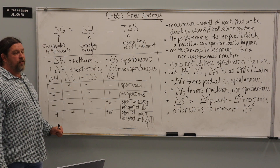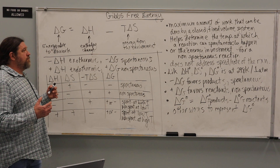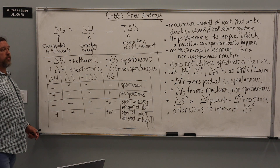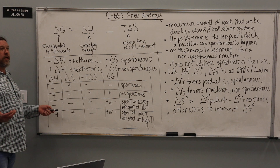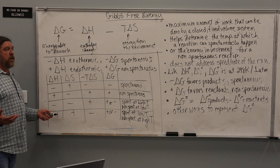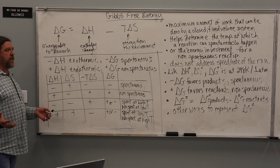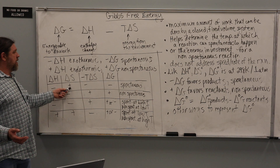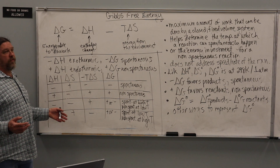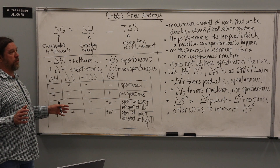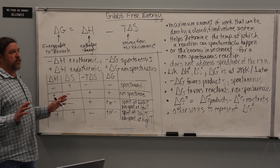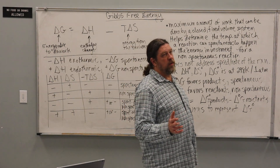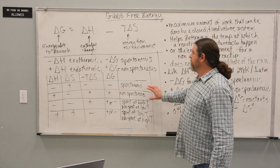This table is useful to memorize. It's not absolutely essential, but it makes life easier and helps you catch mistakes. If you get an answer to a problem that says it's spontaneous but you have a positive Gibbs, yet you also have a negative enthalpy and a positive entropy, you probably flipped a symbol — put a positive where there should be a negative, or a minus where there should be a plus. So this is very helpful for catching errors.